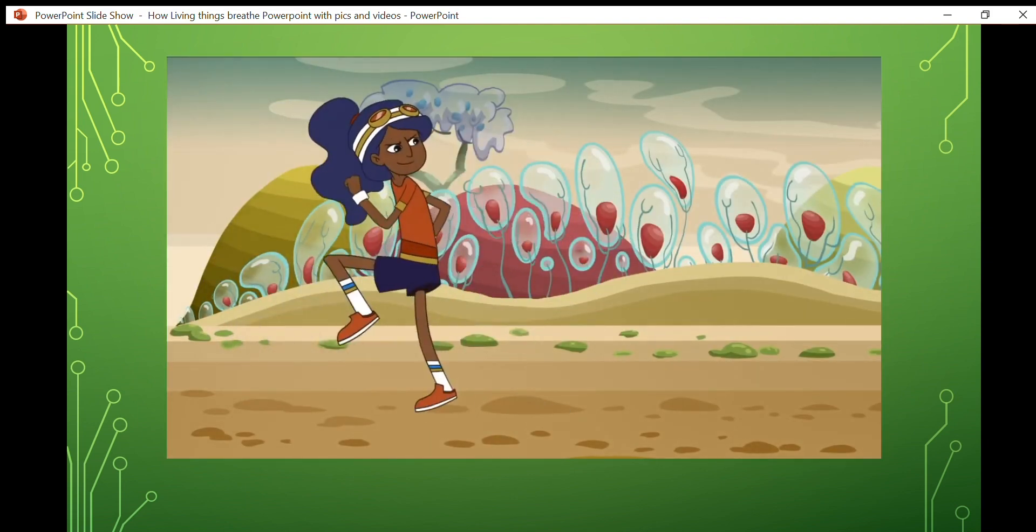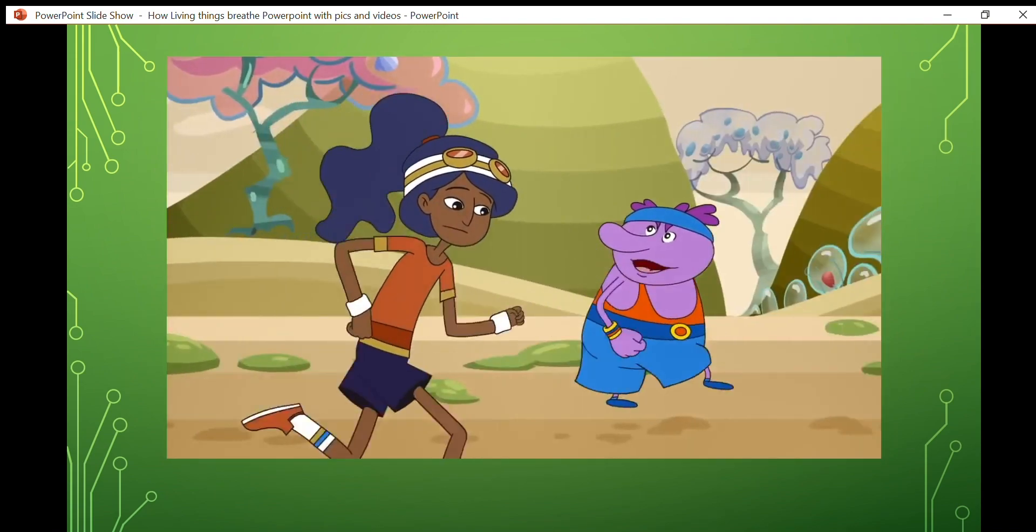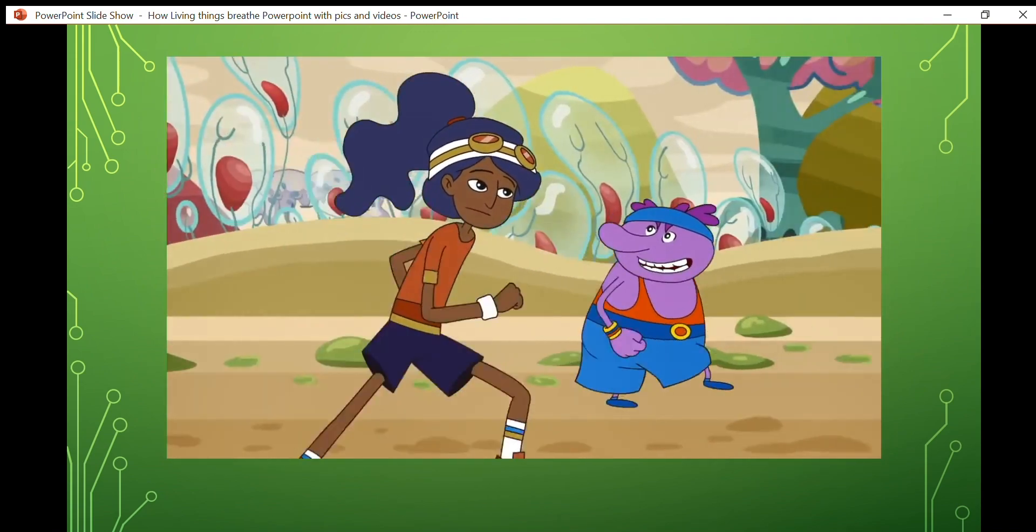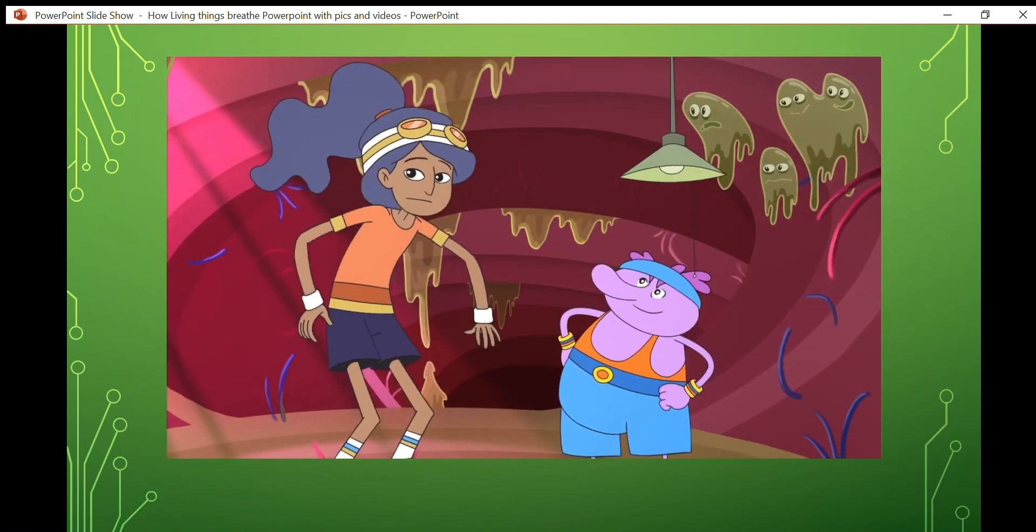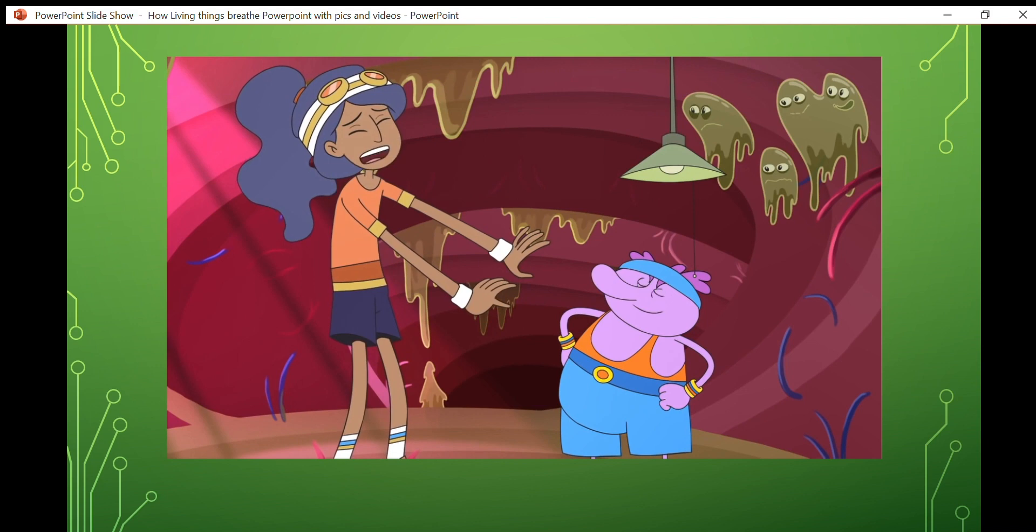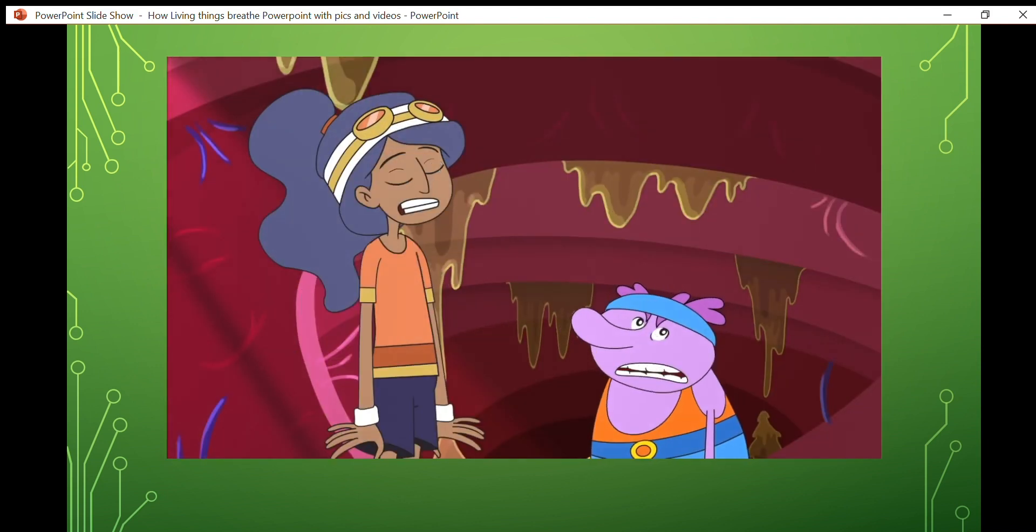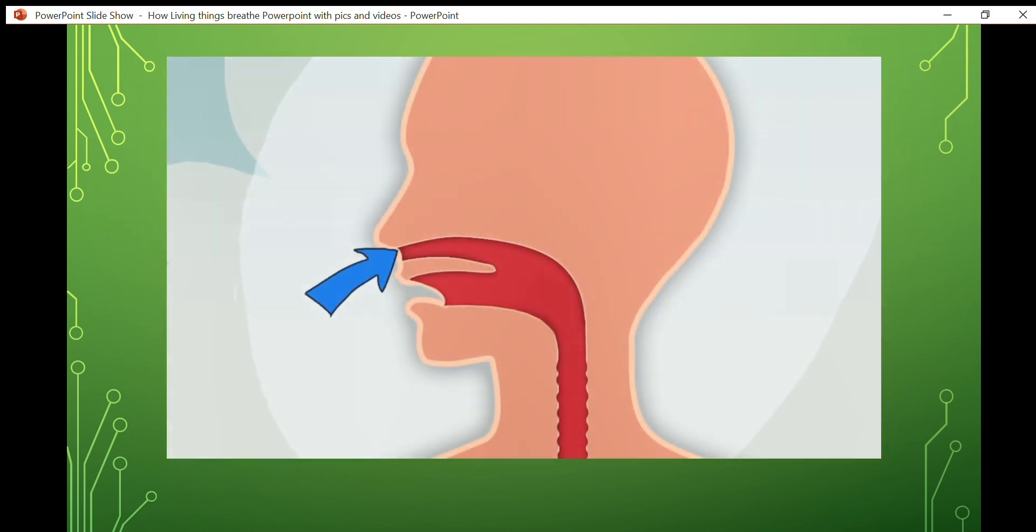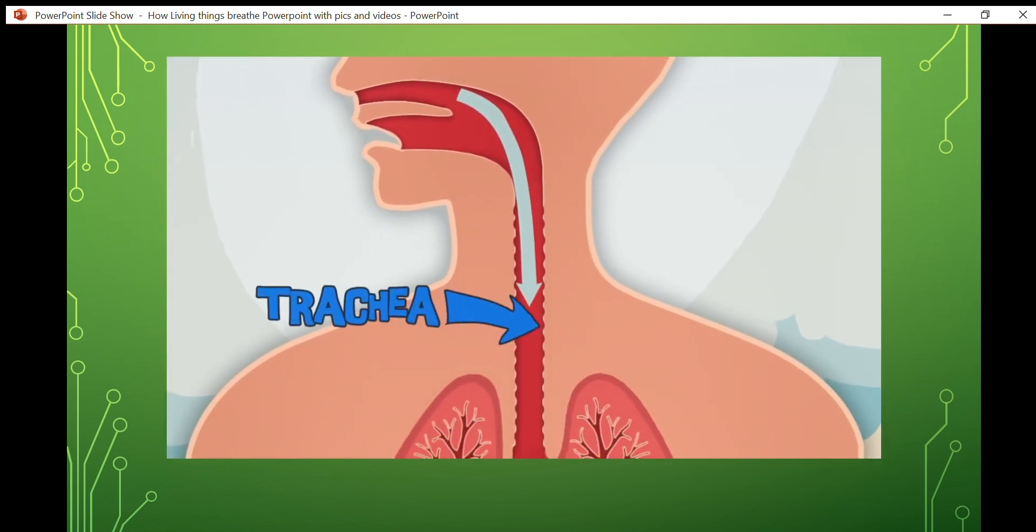In we go! You know where we're going? Of course. Into the respiratory system. And more specifically, the lungs. This is gross, Nerv. There are boogers everywhere. Let's get out of here, Chloe. When you inhale, air comes into your nose or mouth and then down your windpipe, also called the trachea. At the end of the trachea are two large tubes called the bronchi.